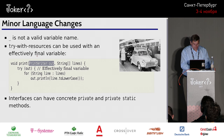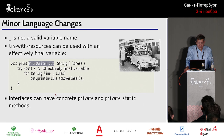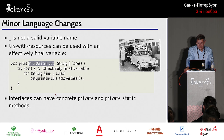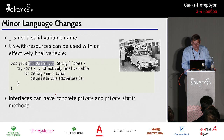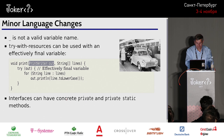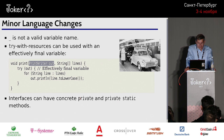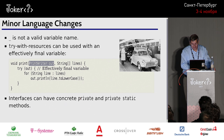In Java 8, interfaces could have default methods and static methods. Now in Java 9 you can also have private methods and private static methods. Why would you want a private method in an interface? You can factor out common code from default and static methods into these private methods. The rationale: since a private method can't be overridden, there's no reason not to allow it in an interface.